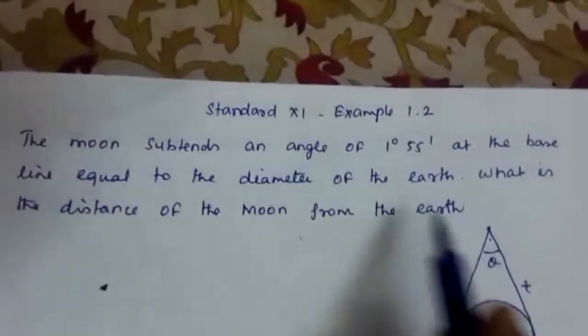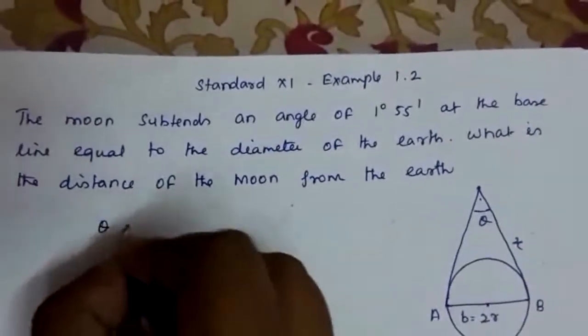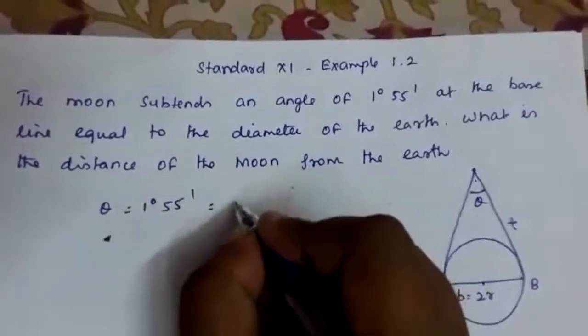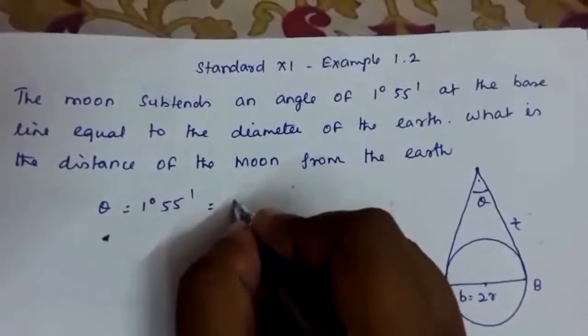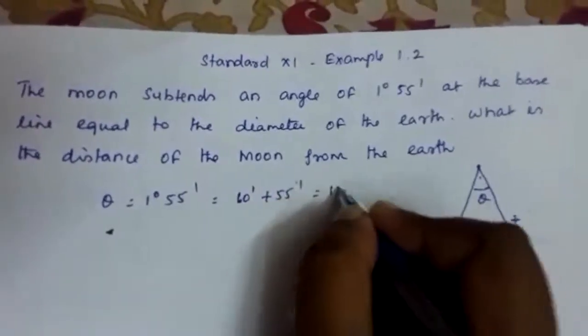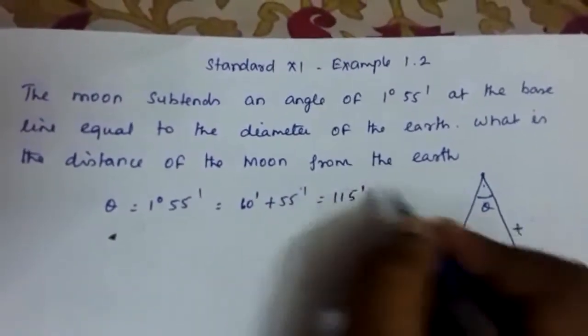Now what is given in the problem here is theta is equal to 1 degree 55 minutes, which is equal to what? 1 degree is 60 minutes, so 60 minutes plus 55 minutes which is equal to 115 minutes.